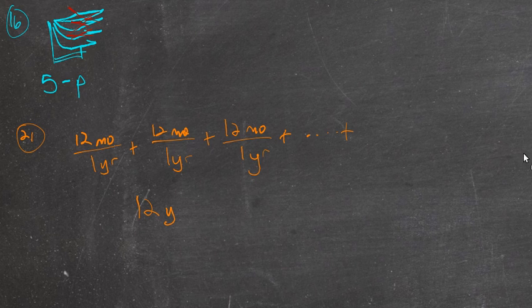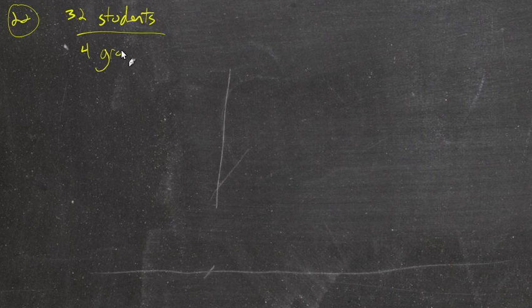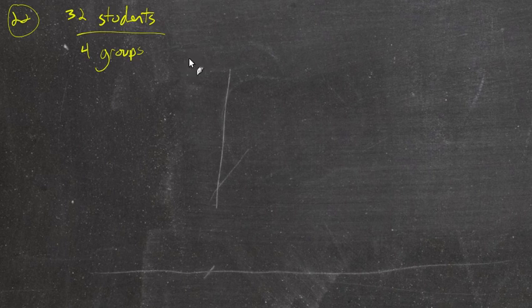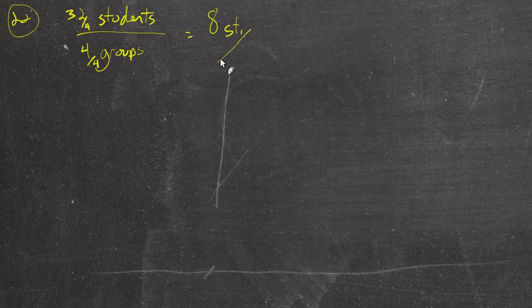Number 22 starts on the problems involving rates. 32 students among 4 groups. Assuming there's an equal number of students in each group, how many students are in one group? So we divide by the denominator. Divide by 4. Divide by 4. So we get 8 students per group.